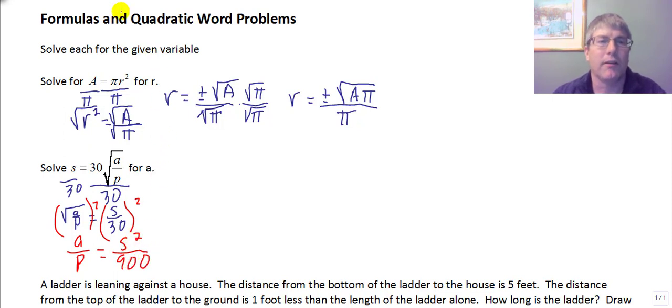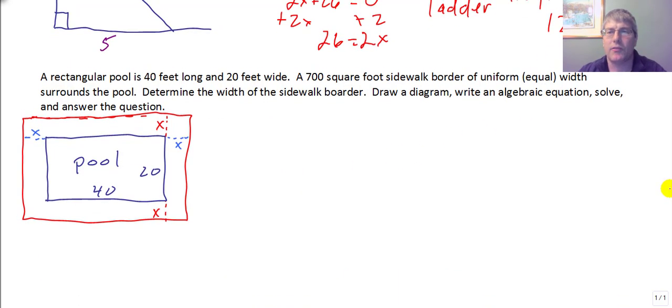And we're looking to solve for a. If I multiply both sides by p, we end up with p times s squared all over 900 is equal to a. a equals ps squared over 900. Let's take a look at our next question.